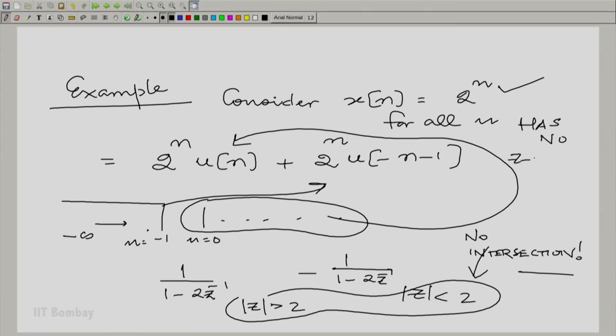If I bring in impulses, the story is different. But it has no z transform in the traditional sense. Now, what could happen at times is that this business of expansion can actually take you to a bigger z, bigger region of convergence.